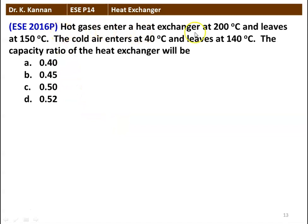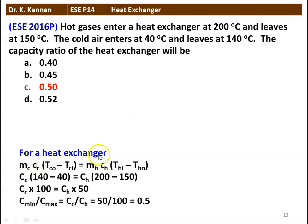Next question: hot gases enter a heat exchanger at 200°C and leave at 150°C. Cold air enters at 40°C and leaves at 140°C. The capacity ratio of the heat exchanger will be 0.4, 0.45, 0.50, or 0.52. We calculate: heat gained by cold fluid equals heat lost by hot fluid — CC × (140 − 40) = CH × (200 − 150), giving CC × 100 = CH × 50. Therefore C_minimum / C_maximum = CC / CH = 50 / 100 = 0.5. The capacity ratio is 0.5.